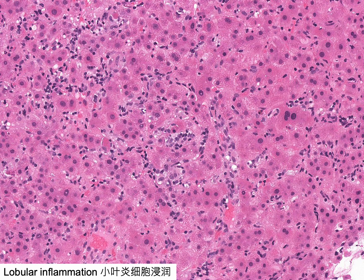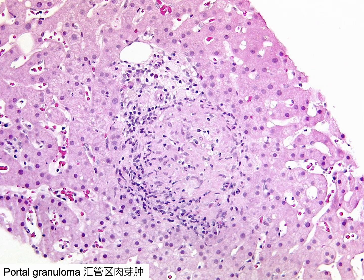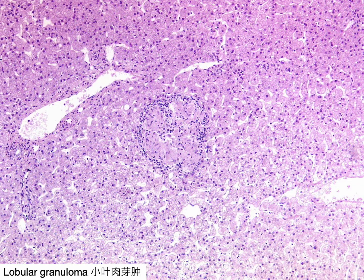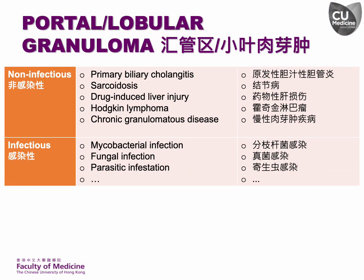This example shows prominent lobular inflammation featuring a significant number of mononuclear inflammatory cells infiltrating the sinusoids, with apoptotic bodies and foci of spotty necrosis also present. Granulomas may be well-formed non-caseating epithelioid granulomas or vaguely formed epithelioid granulomas, found in portal tracts or within the hepatic lobule. The primary differential diagnosis for portal and lobular granulomas includes infectious and non-infectious origins, with important non-infectious causes including PBC, sarcoidosis, and drug-induced liver injury.